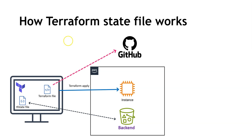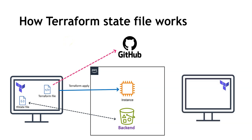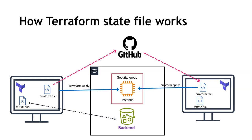We will commit it to GitHub, and our colleague or other team member is going to clone that repository into their system and do their own modifications. Let's say we have created an EC2 instance. Now he wants to add a security group — he updates it and runs Terraform apply, which creates the security group. Whenever he does that, the Terraform state file also gets updated. And that updated Terraform state file should come into the back-end.